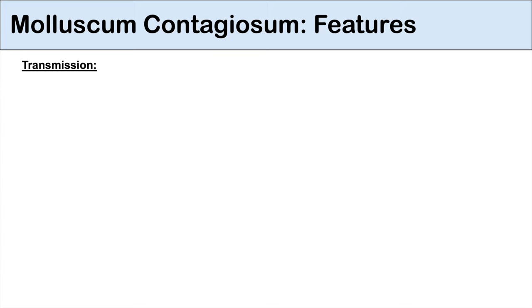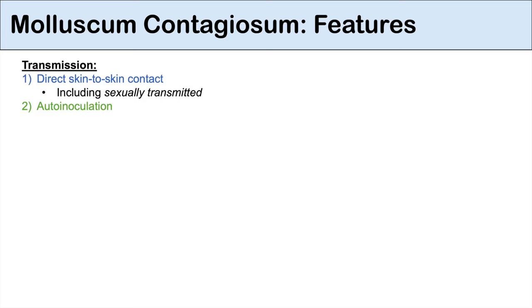So how is the molluscum contagiosum virus transmitted? Transmission can occur through direct skin-to-skin contact, so anything with direct contact can lead to transmission of the virus from one infected individual to another. This includes sexual transmission. Auto-inoculation is also another way of transmitting this — if an individual has the papules and they scratch or dig at them, they can spread the virus to other areas on their body.